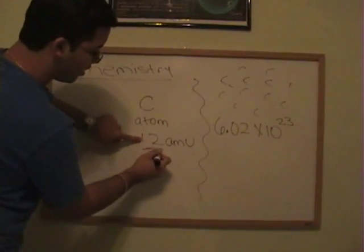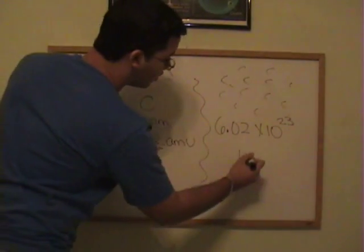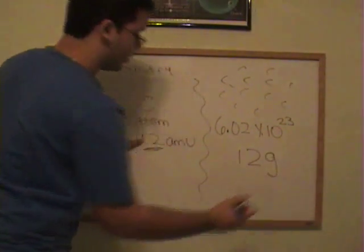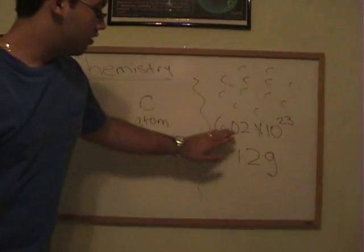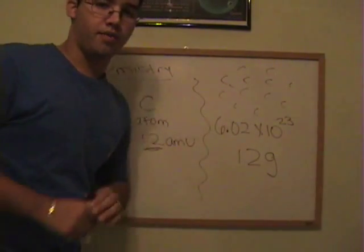then you get this same exact number, 12, but instead of writing it in AMUs, you're going to write it in grams. So right now, 6.02 times 10 to the 23rd carbons is 12 grams.